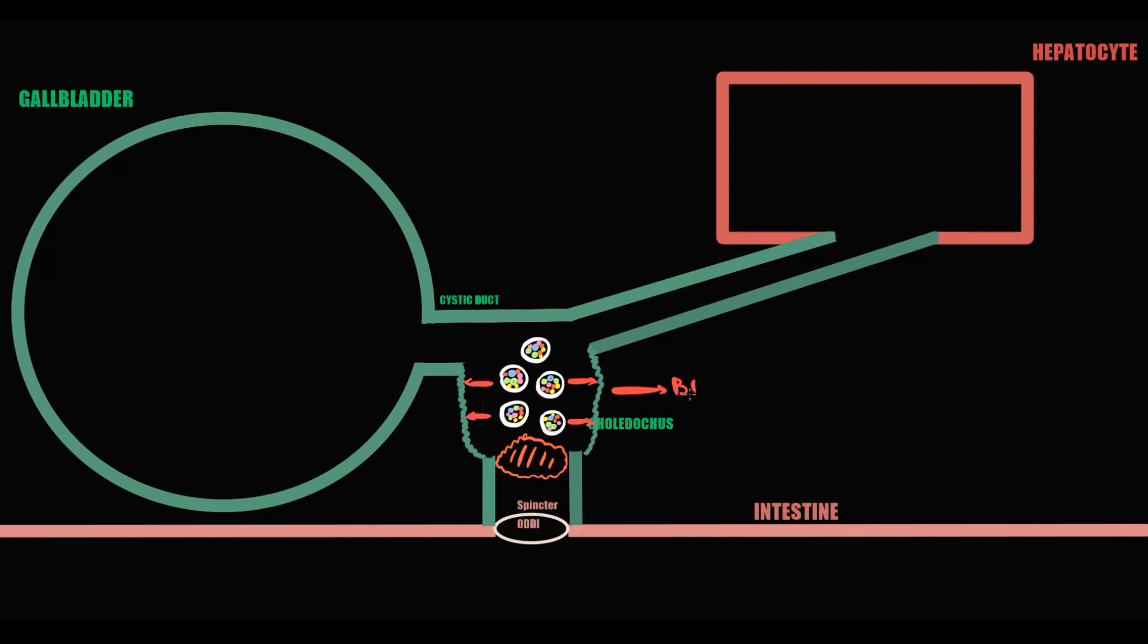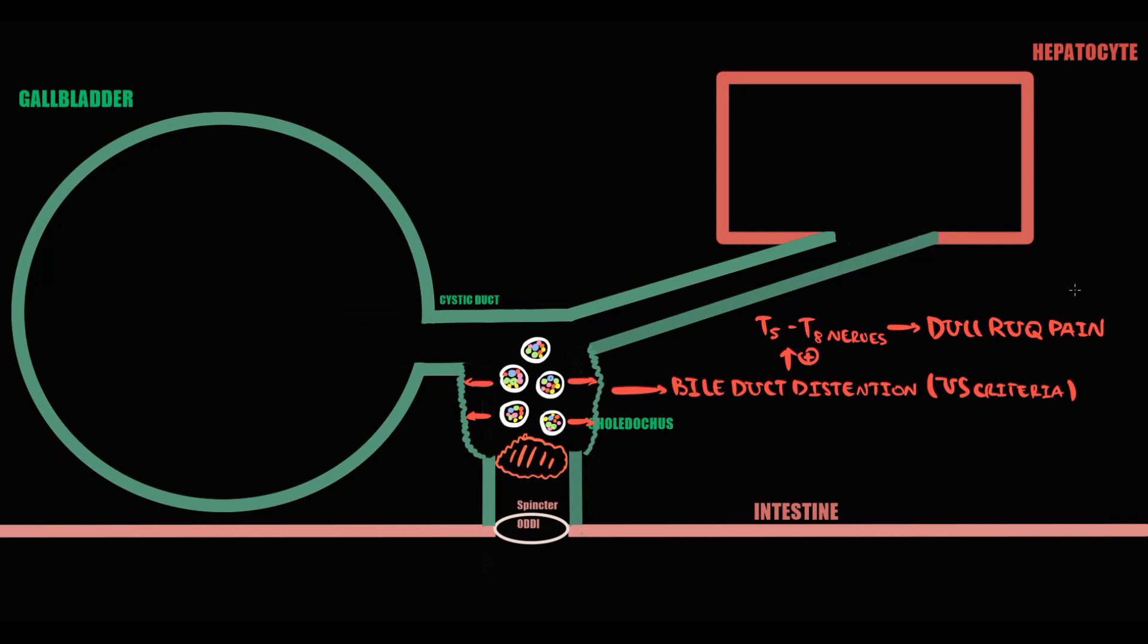Distension of the common bile duct is sensed by nerve endings that carry the signal to the foregut autonomic nerves, which in response become activated. The activation produces an abrupt onset of dull pain in the abdomen.